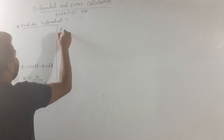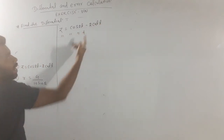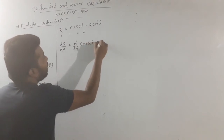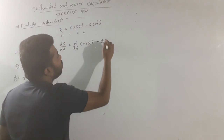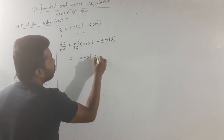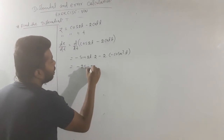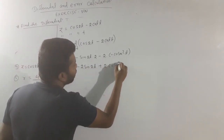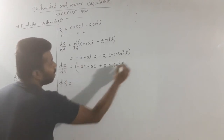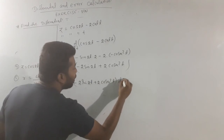Next question: z equals cos 2t minus 2 cot t. Differentiate both sides with respect to t. dz by dt equals −sin 2t into 2 minus 2 times (−csc squared t), giving dz by dt equals −2 sin 2t plus 2 csc squared t. So dz equals (−2 sin 2t + 2 csc squared t) dt.